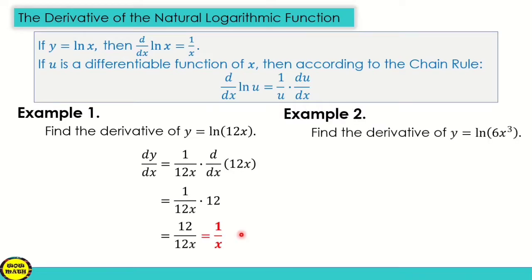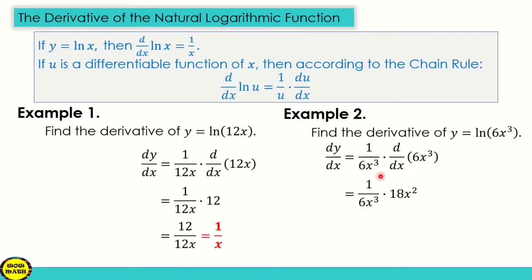Another example: find the derivative of y is equal to ln of the quantity 6x cubed. Our u here is 6x cubed. Following the same process, dy/dx is equal to 1 over 6x cubed times the derivative of 6x cubed. The derivative of 6x cubed is 18x squared. So we get 18x squared over 6x cubed. Dividing: 18 divided by 6 is 3, and x squared over x cubed leaves x in the denominator. The final answer is 3 over x.